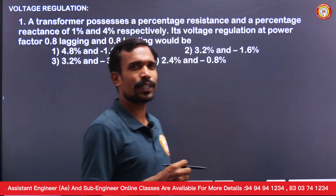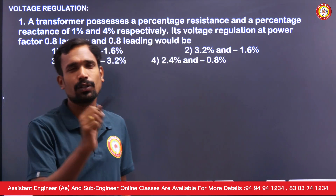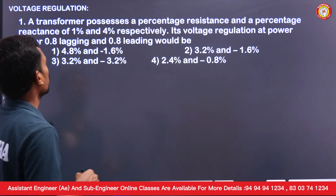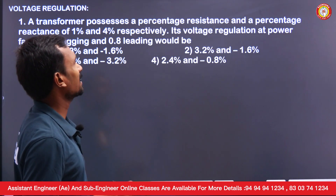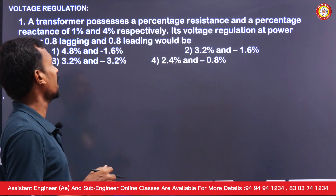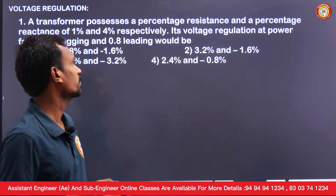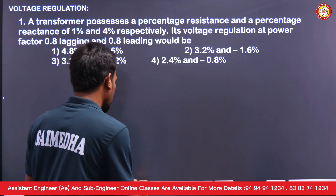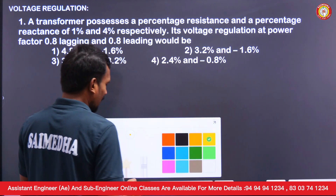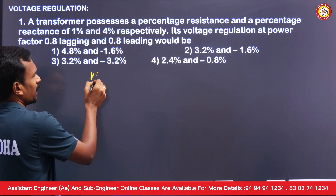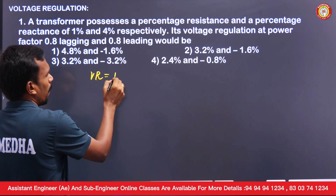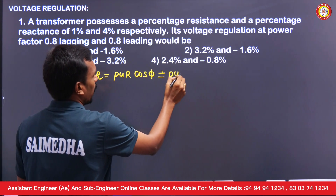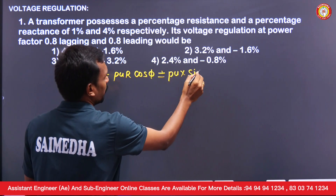In this video we are going to discuss numerical questions on voltage regulation. A transformer possesses percentage resistance and percentage reactance of 1% and 4% respectively. Its voltage regulation at power factor 0.8 lagging and 0.8 leading will be calculated using the formula: per unit resistance × cos φ ± per unit reactance × sin φ.